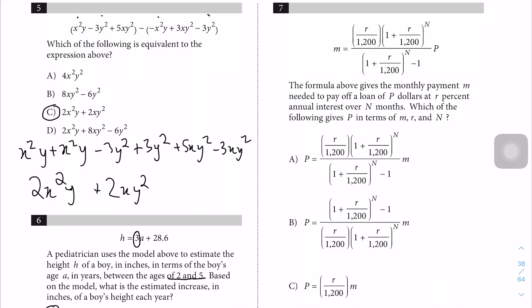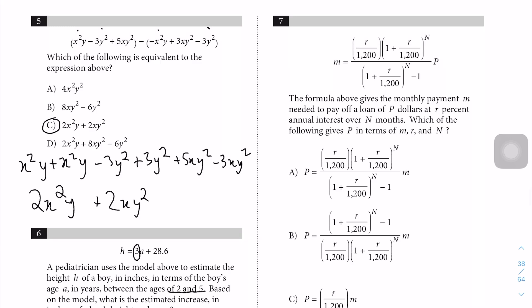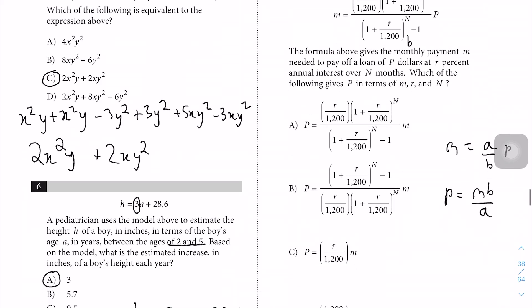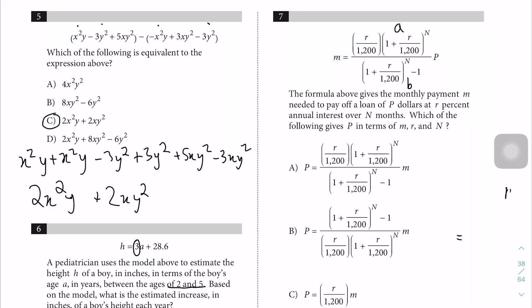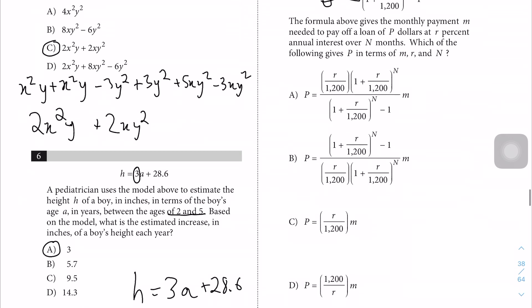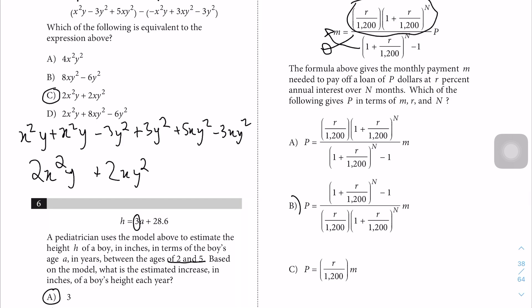Question 7 is a simple rearrangement question. They've made it look complicated with long expressions, but if you call the numerator part 'a' and the denominator part 'b', and you want everything in terms of P, then m = (a/b)P, so P = mb/a. Essentially, the current numerator moves to the denominator and vice versa. The answer is B.